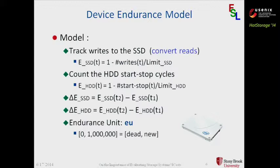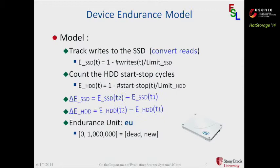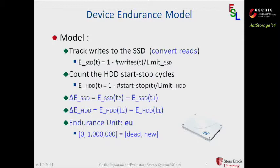We talked about the endurance model for SSD and HDD, and we want to emphasize that the endurance of a device depends heavily on the history of usage of that device. So we are actually using delta endurance to reflect the endurance reduction of that device for a specific workload. We use EU as the endurance unit. EU is based on 1 million: you multiply the endurance we previously discussed by 1 million, giving a range from 0 to 1 million — where 0 means a dead device and 1 million means a new device.